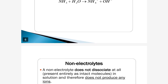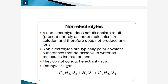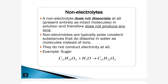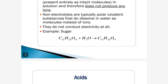Now next, non-electrolytes. A non-electrolyte does not dissociate at all — it is present entirely as intact molecules in a solution and therefore does not produce any ions. Non-electrolytes are typically polar covalent substances that dissolve in water as molecules instead of ions. They do not conduct electricity. For example, sugar dissolved in water does not conduct electricity; it simply becomes a sugary solution.